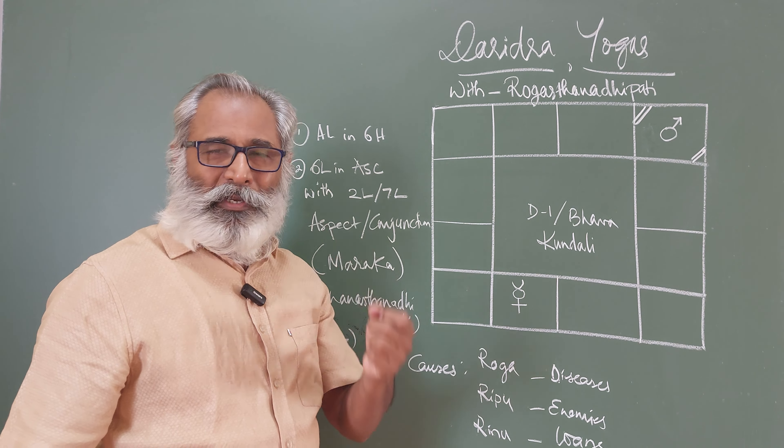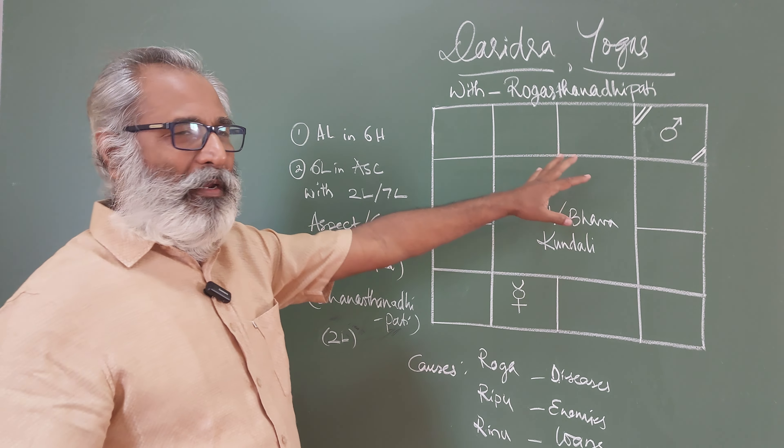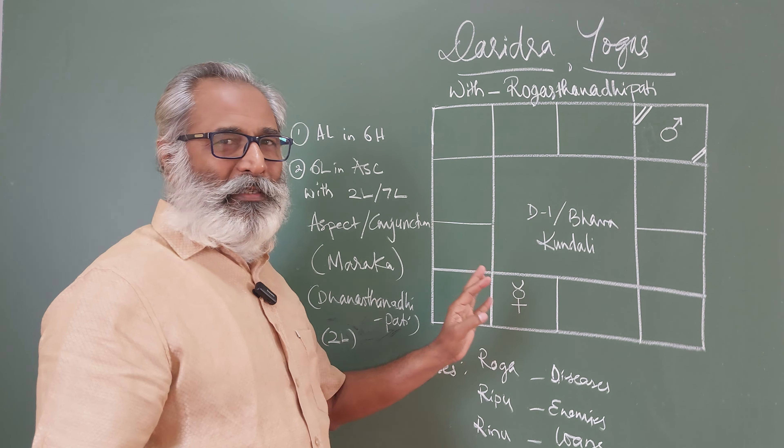Ascendant Lord in the sixth house. I have just taken a chart with an arbitrary Lagna. For all the Lagnas, it is applicable in one way or the other. There might be some confusions, which I will take up — and I will exclusively make videos to solve them. Even for the first Dharidra Yoga where it was the twelfth Lord in the Ascendant, people started asking about Kumbha Lagna where the twelfth Lord becomes Saturn, and Saturn sitting in the Ascendant will give Sasa Yoga. These are all exceptions to the rules.